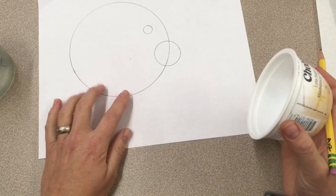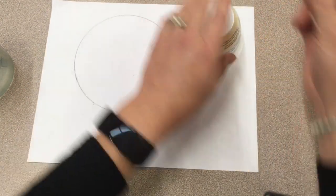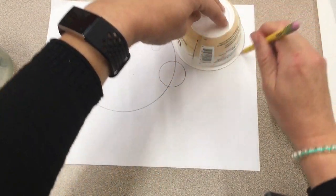If you don't have the compasses or any compass at all, you can also use circular shapes like yogurt cups.